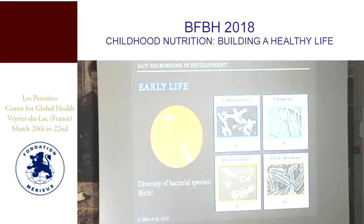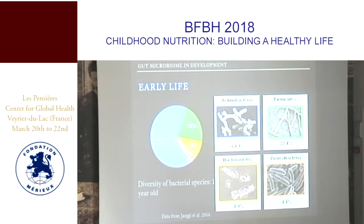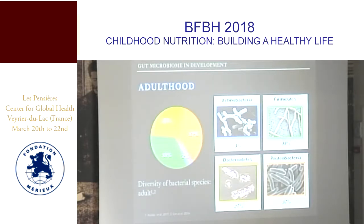Representing this across three slides looking at four phyla broadly: the diversity of bacterial species at birth is largely Proteobacteria, which then changes to largely Actinobacteria by about one year of age. A note of caution — a lot of these observations are based on one or two studies, so this is not representative data from across the world. In adults where there is a bit more data, we see three phyla roughly equally distributed with some Actinobacteria.